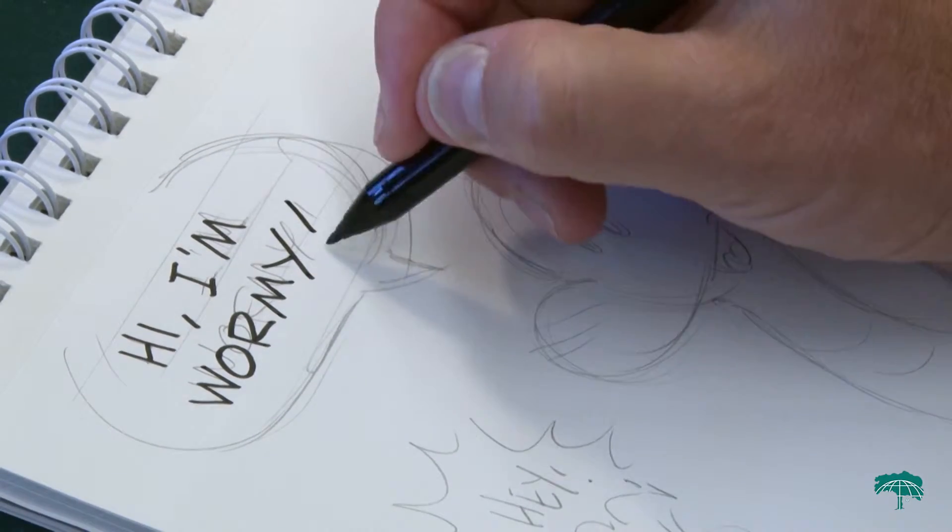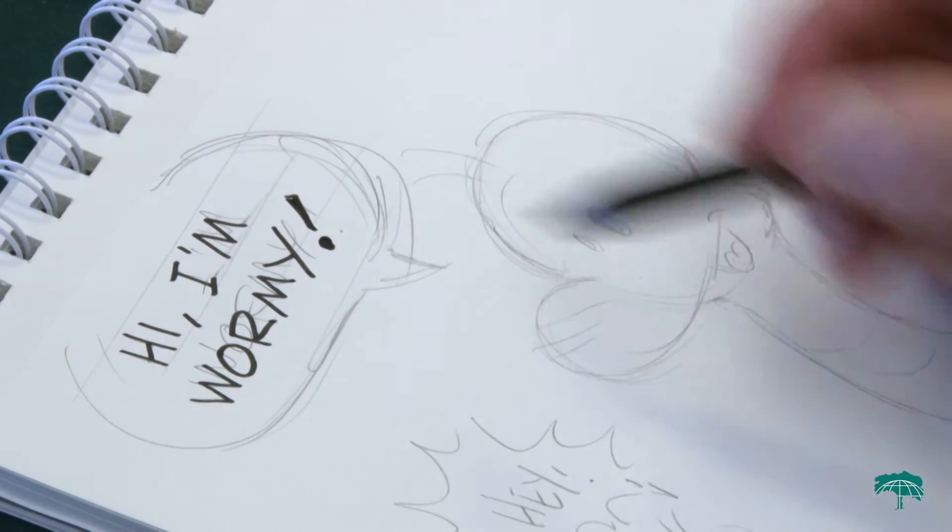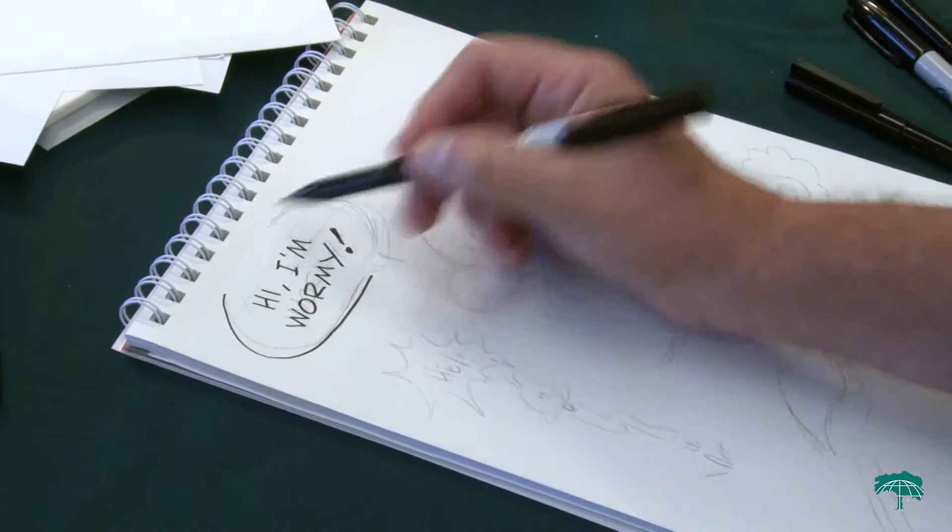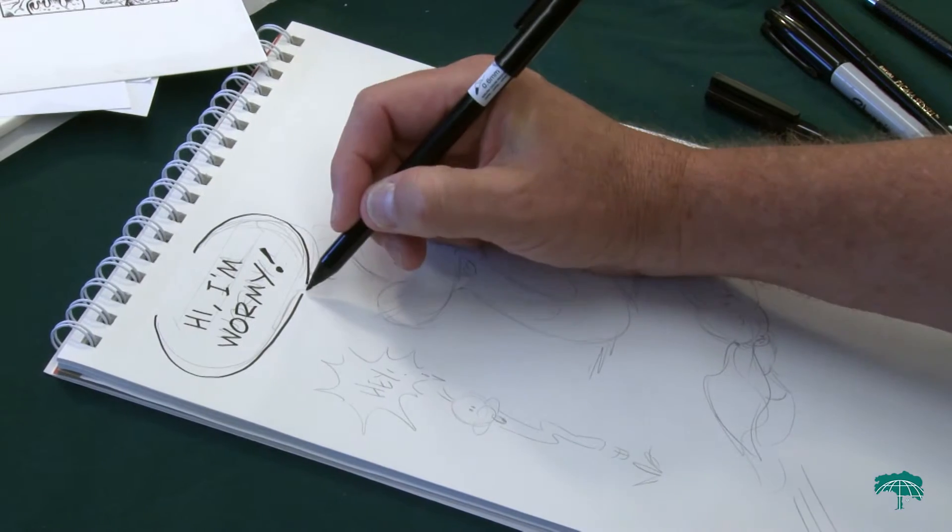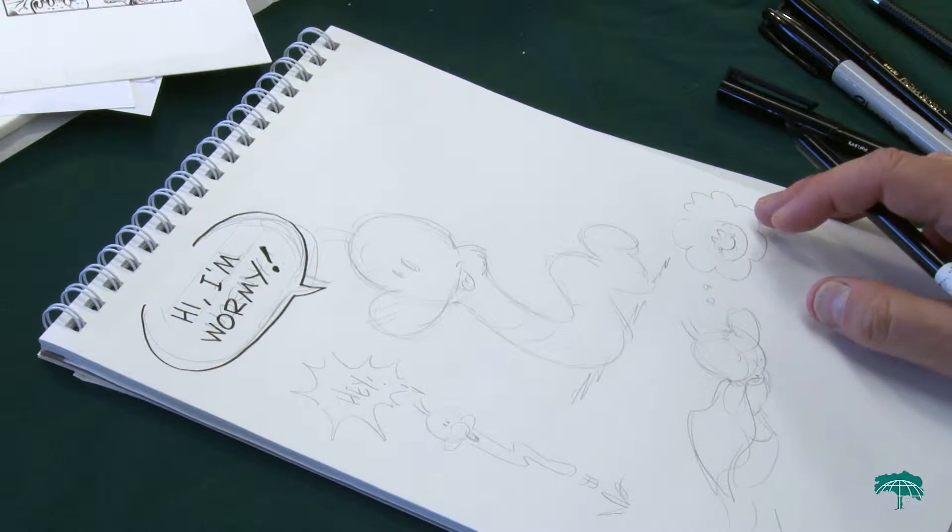If you decide you want to make that even bigger, you can make the exclamation point a little bigger and heavier. I always do the words first, and then add the balloon. That way you make sure you've got enough space for the balloon. You have room to make a pointer going to the character.